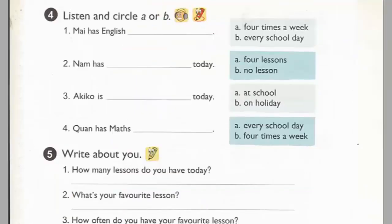Page 43, Activity 4. Listen and circle A or B. One. How often do you have English, Akiko? I have it every day, Mai. Do you like English? Yes, of course. How about you? How often do you have English? I have it four times a week.